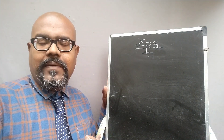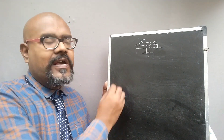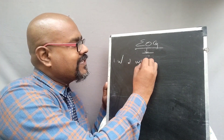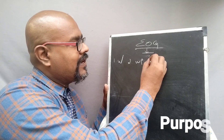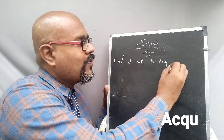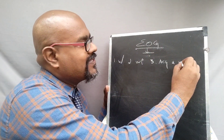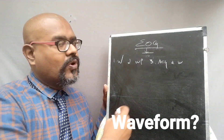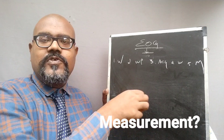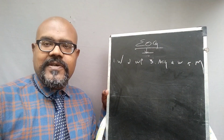As like the previous vital parameters, we are supposed to answer 5 questions for EOG also. The first question is: what is EOG? The second question is: what is the purpose of EOG? The third question: how to acquire this EOG from the human body? The fourth question: what is the waveform you got from the EOG? And the fifth: what to diagnose using that particular EOG waveform?